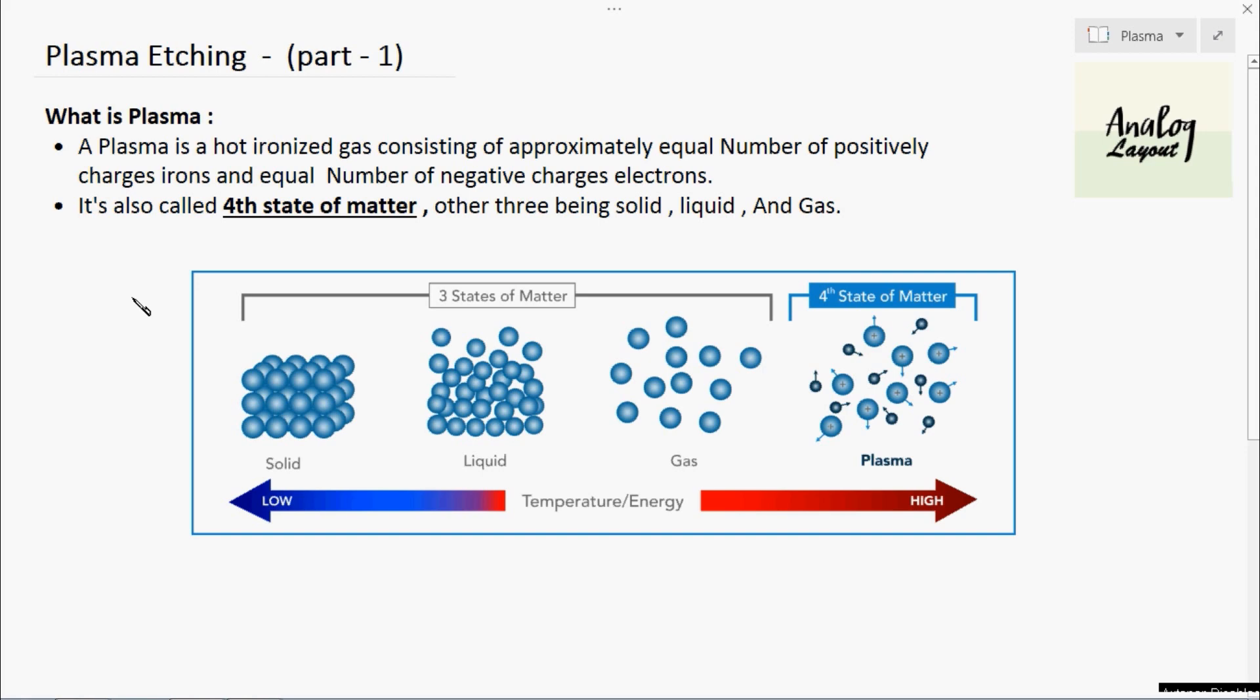Plasma is a hot ionized gas consisting of approximately equal number of positively charged ions and negatively charged electrons. The plasma consists of equal numbers of positive and negative charges present in equal numbers.